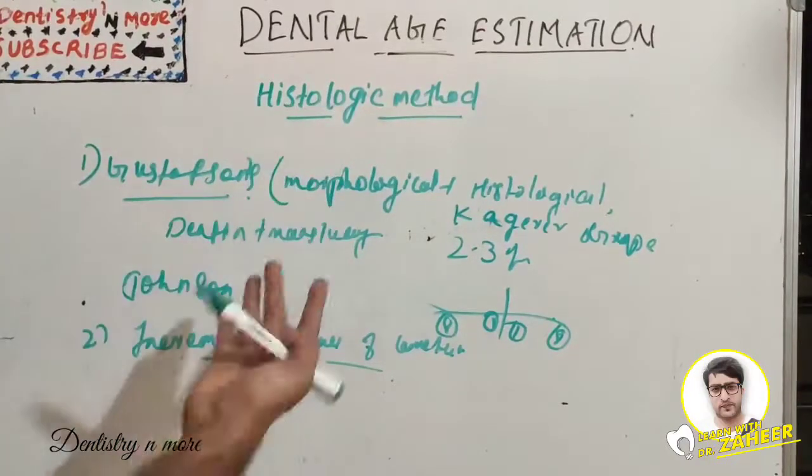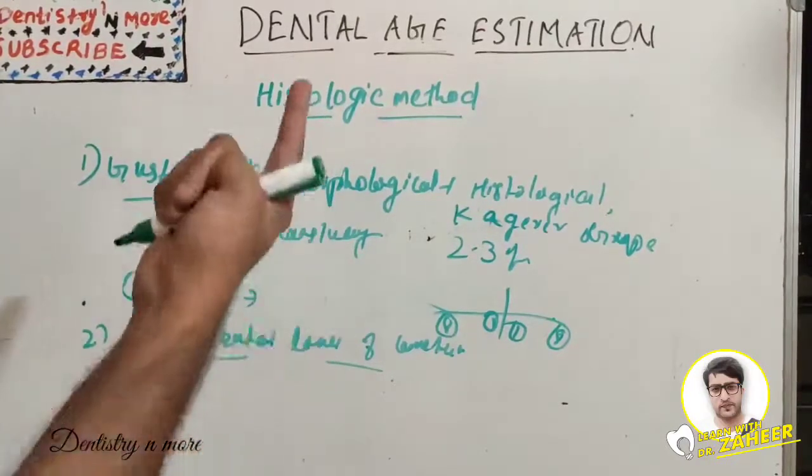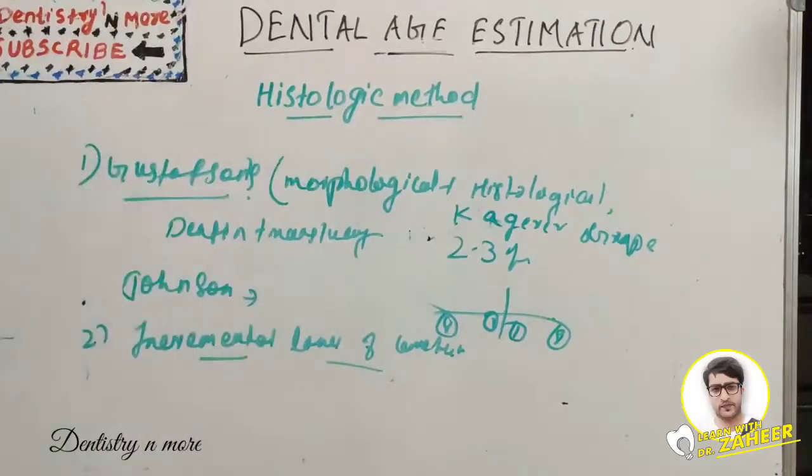In histologic method we can use the incremental lines of cementum for age estimation. We use central incisors or third molars. Kagerer and Grupe said the accuracy will be within two to three years. That is all about the histologic method and dental age estimation.